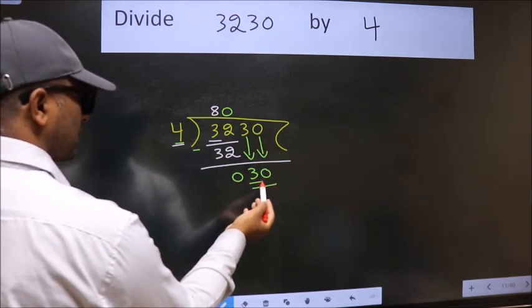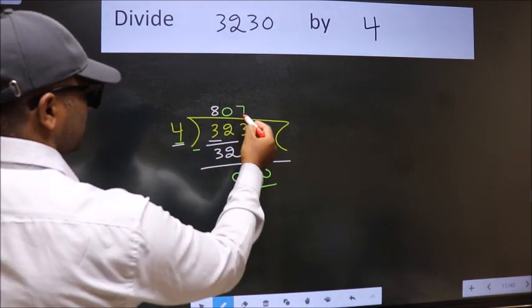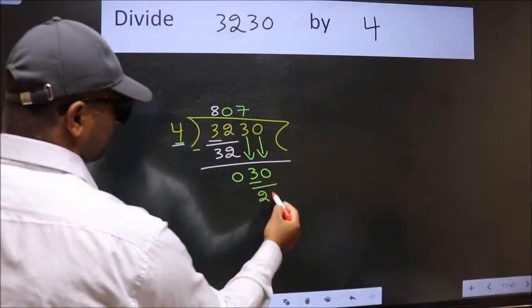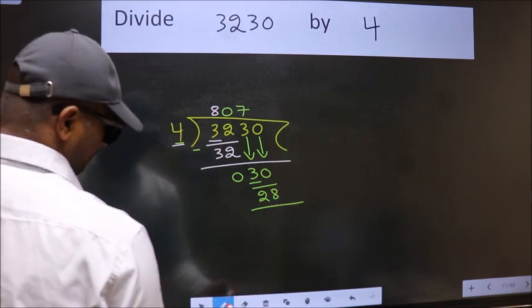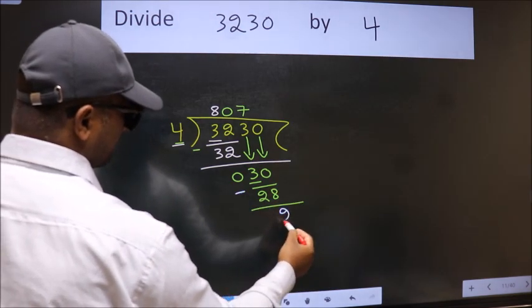A number close to 30 in 4 table is 4 times 7 is 28. Now we subtract. We get 2.